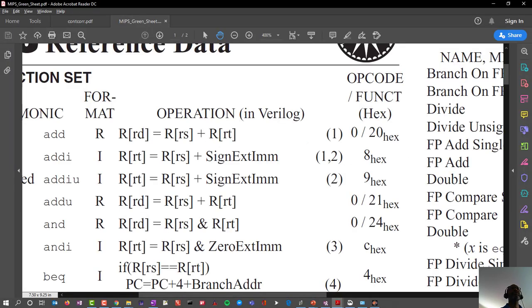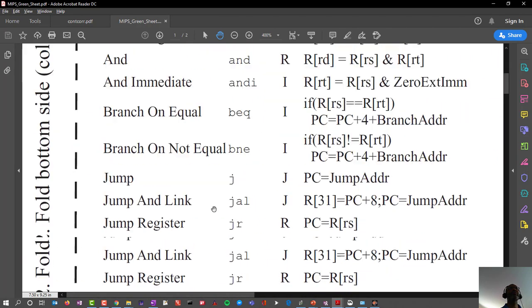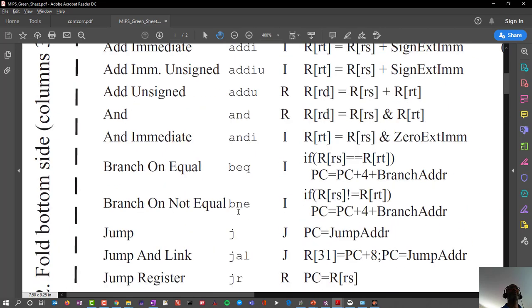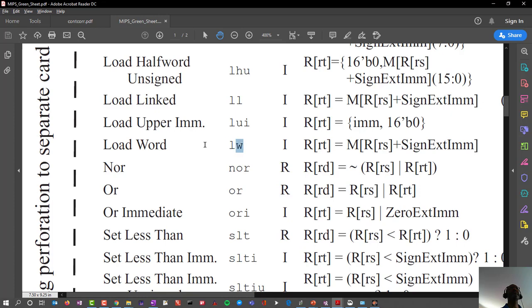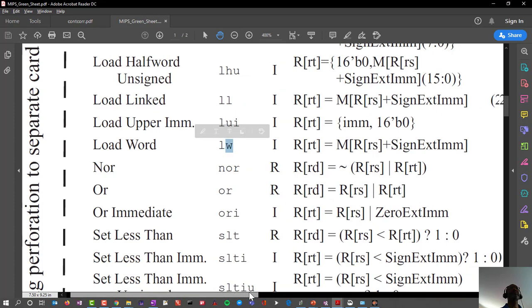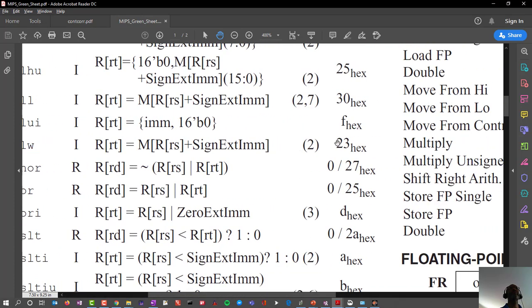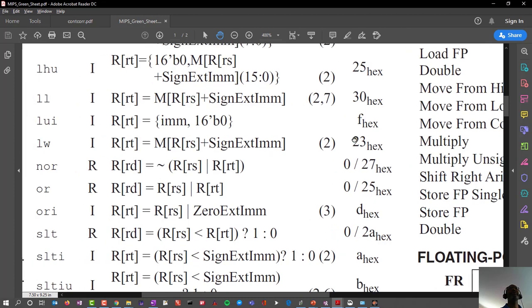If I look at the green sheet, the opcode for a load word, let's see, these are in alphabetical order, so there's a load word, and let's scoot this over. So it looks like the opcode is 23.